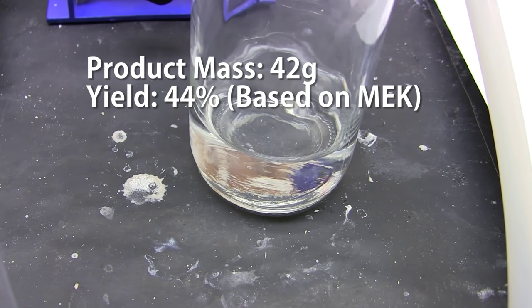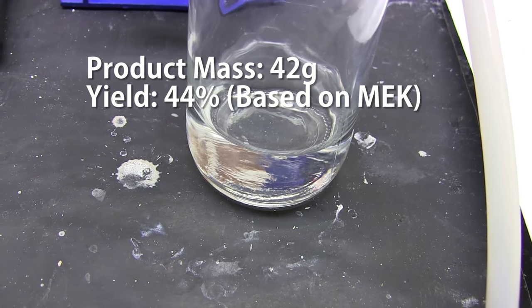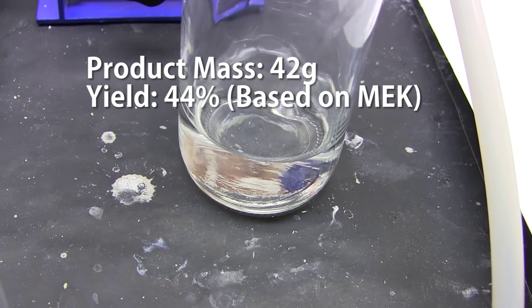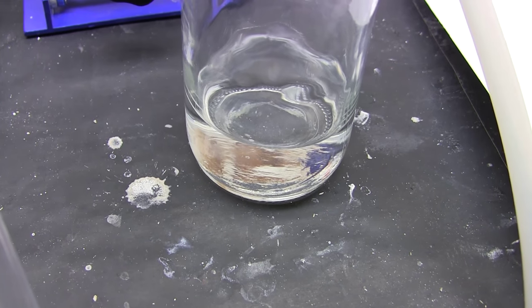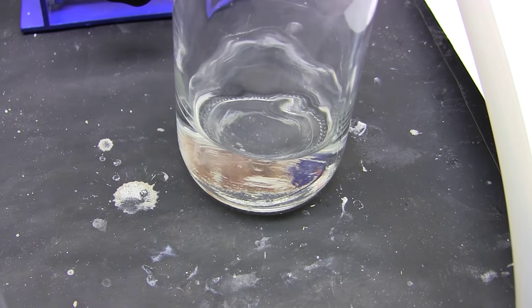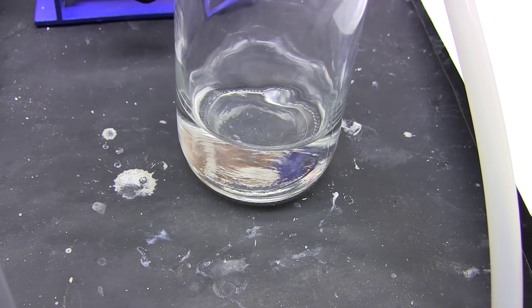My final purified yield was 42 grams or about 44% based on methyl ethyl ketone added. I think the poor yield was primarily due to the bad bleach I got. If you get a factory fresh bottle I think you'll do better.